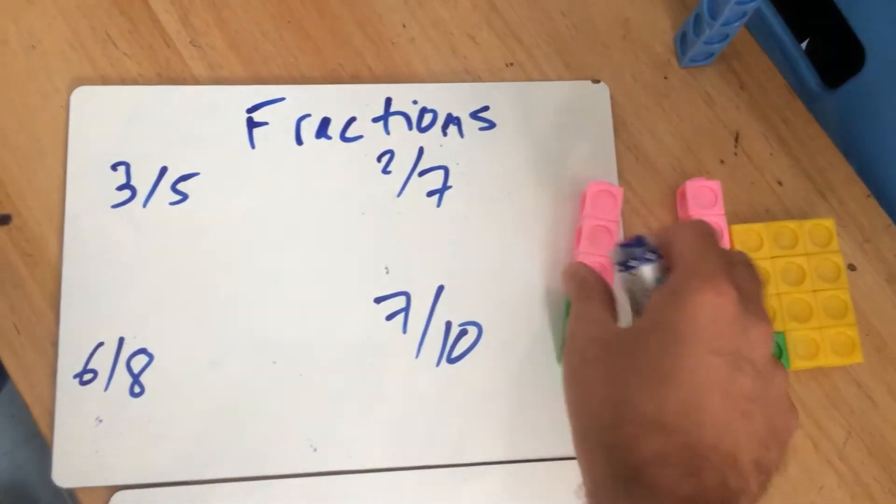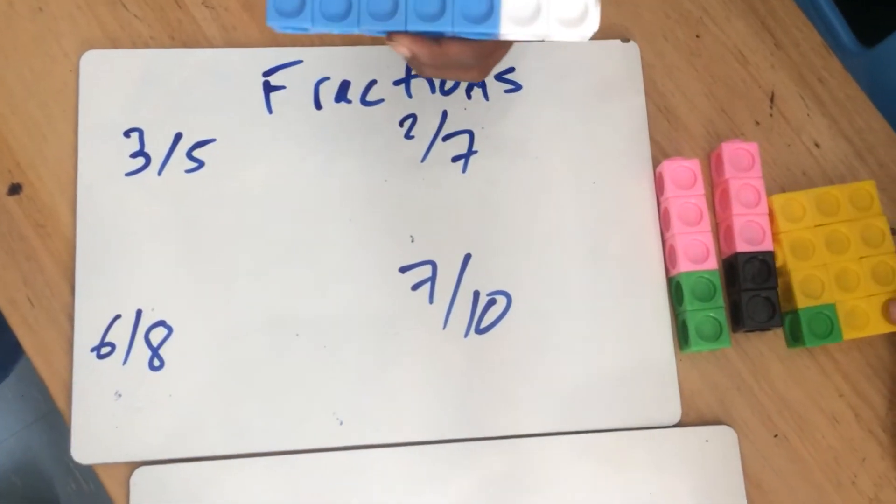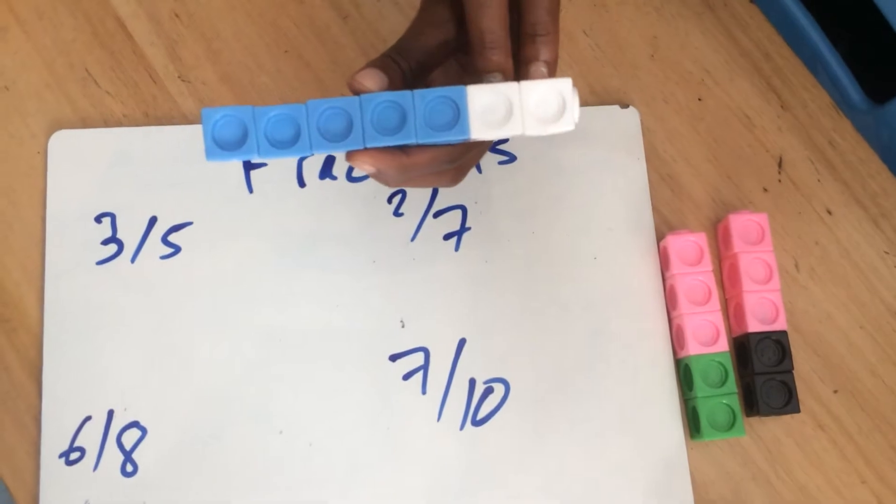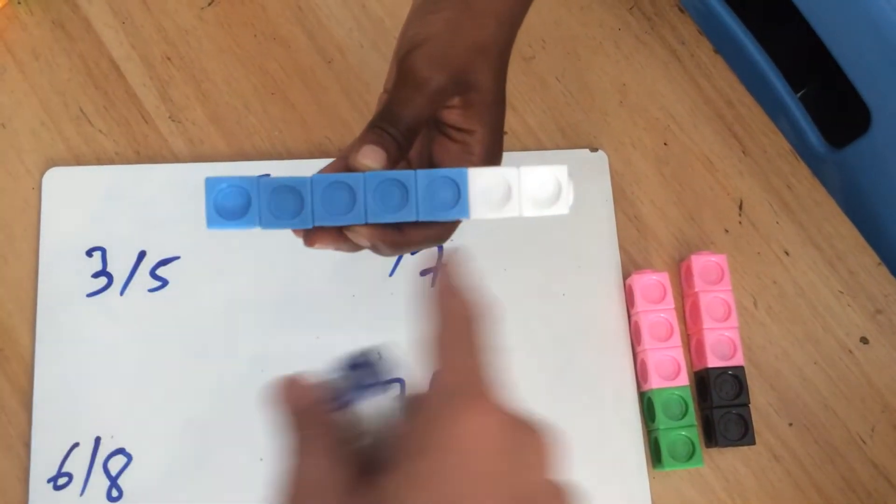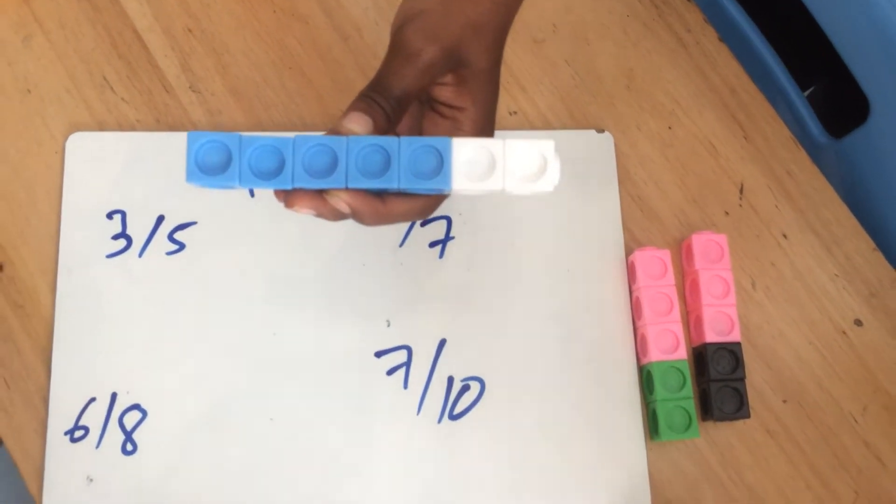Brilliant. Let's see two sevenths, please. So here there's two white ones, and then there's five blue ones. Okay, so two out of a total of seven. Fantastic.